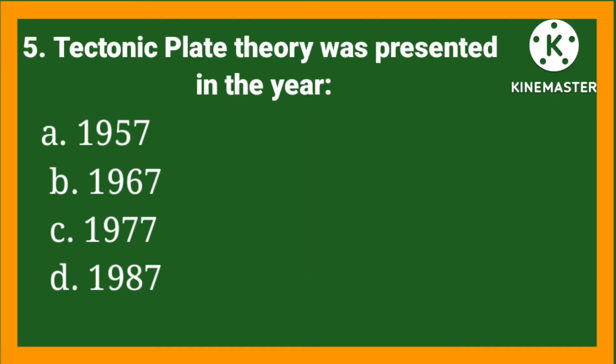MCQ number five: Tectonic plates theory was presented in the year — option A: 1957, option B: 1967, option C: 1977, option D: 1987. The right option is B, 1967.